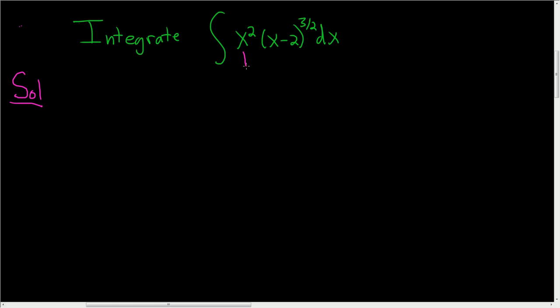If you look at x squared, if you just keep differentiating that, eventually it's going to be zero. So x squared is what we're going to differentiate, and then this piece here, x minus 2 to the three halves, we're going to integrate over and over again. If you differentiate x squared once you get 2x, if you do it again you get 2, and if you do it again you get zero.